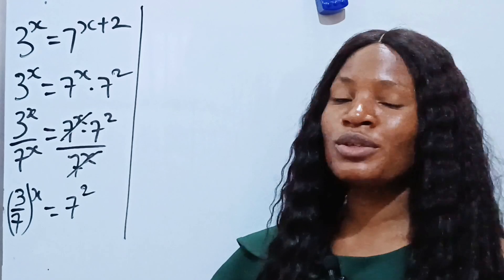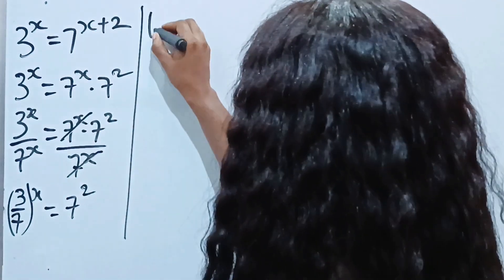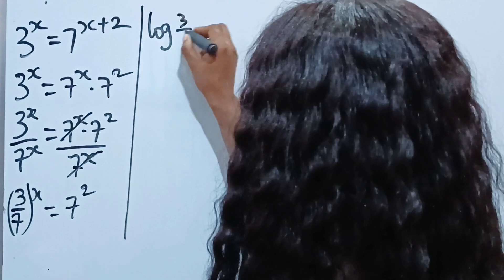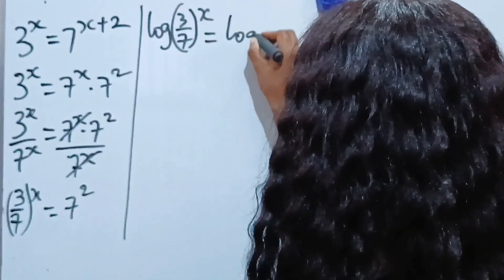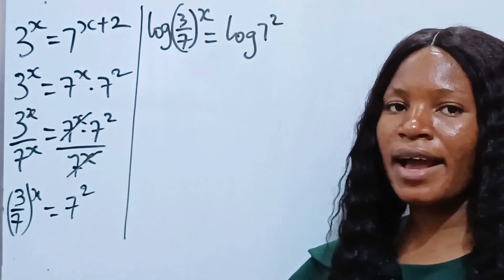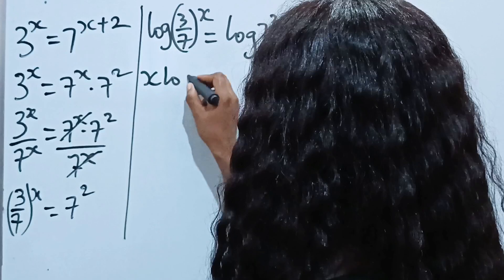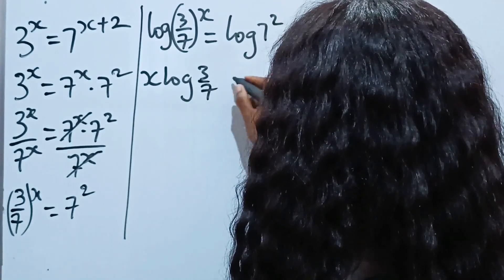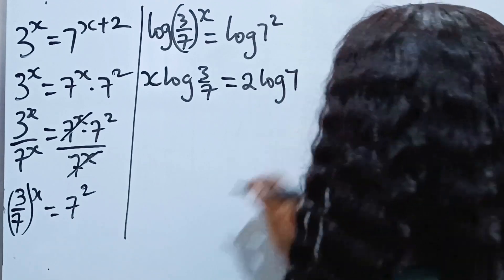Now it's time to introduce our logarithms. So we now have that log 3 over 7 to the power of x equals log 7 squared. Then this will come down just like I explained in the other one. So we are going to have x multiplied by log 3 over 7 equals 2 multiplied by log 7.